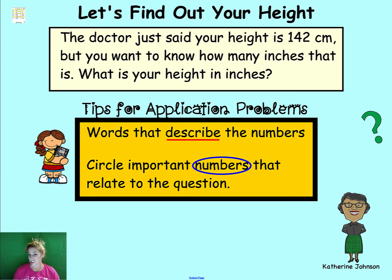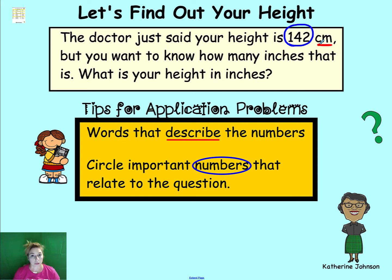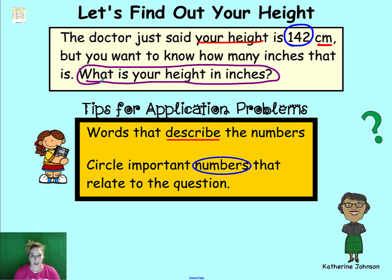Circle 142 because it's how tall you are. Also circle words that tell you what 142 centimeters represents — 'centimeters' is the unit, and 'height' is what's being measured. Then identify the question: what is your height in inches? The answer must be in inches, so we know we need to convert centimeters to inches.